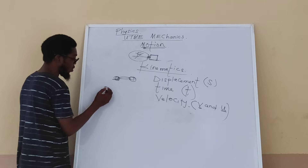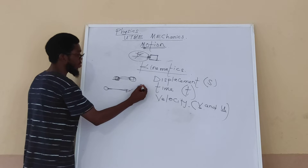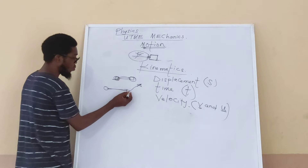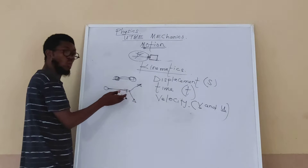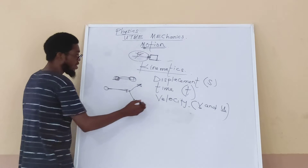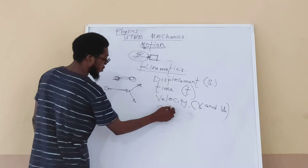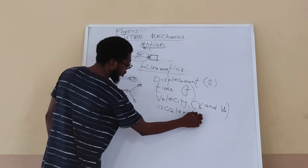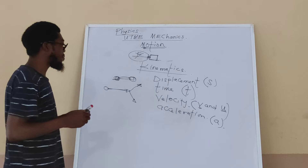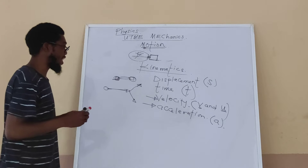Here U is the initial velocity and V is the final velocity. An object moving with a particular speed may slow down or speed up. When we increase the speed we say we accelerate; when we decrease the speed we say we decelerate, which is acceleration in a negative sense. Acceleration means change in speed, and its symbol is A. I'll work through each from velocity to acceleration.